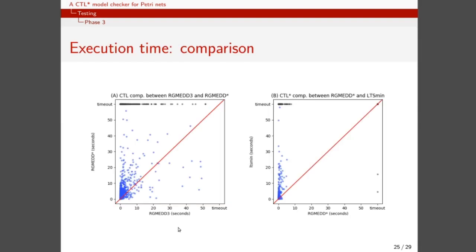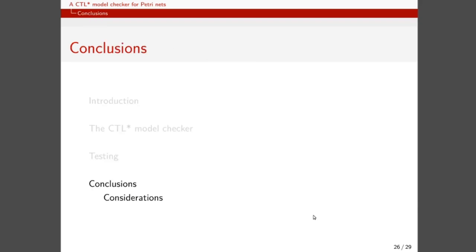Here, we are showing two scatter plots, which detail phase 2 and phase 3 of our testing procedure. Phase 2 is shown on the left. As you can see, the comparison between RGMED-3 and RGMED-STAR is based on blue dots, which are queries. Queries, which are below the red line, are those for which RGMED-3 was slower than RGMED-STAR. As you can see, the majority of the queries are above the red line. The same applies to the plot to the right, which details phase 3 of our testing procedure. As you can see, there are few blue dots below the red line, and are those for which RGMED-STAR was slower than LTSmin.